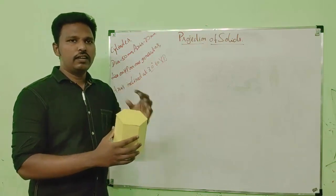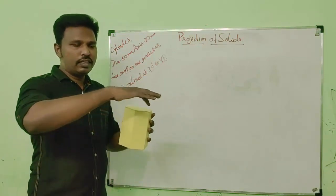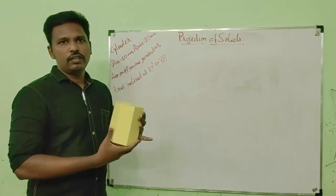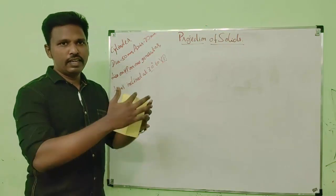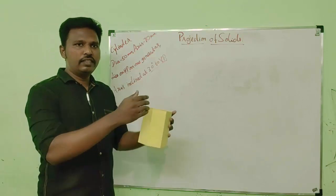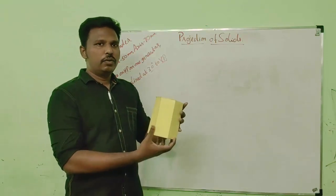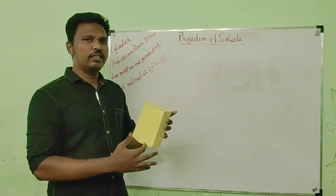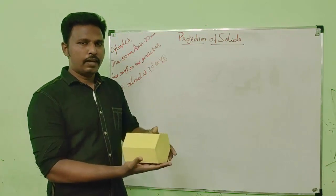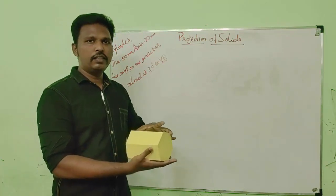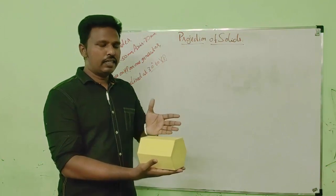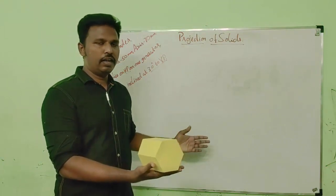Let us assume this as a cylinder. Cylinder is actually having no base edges and gateable edges, so we have to assume that there are some imaginary generators. Generally we draw 8 generators. So one of its generators is resting on HP in this case. The cylinder lies on HP with one of its generators and the axis is inclined to VP at 30 degrees.